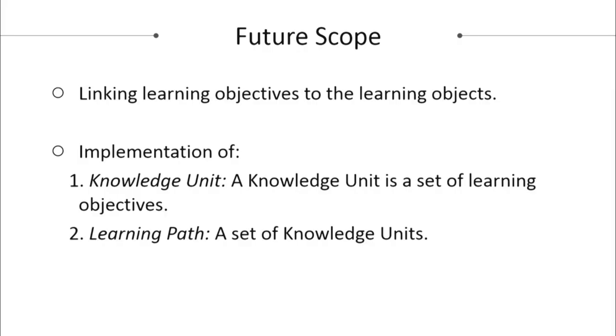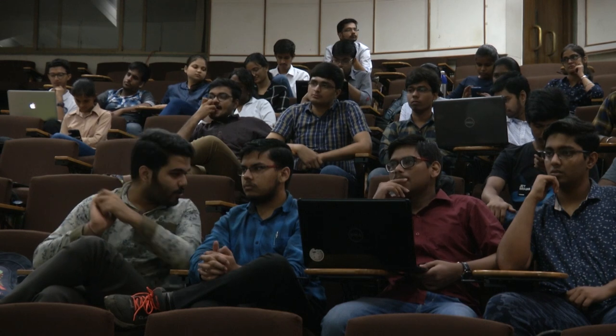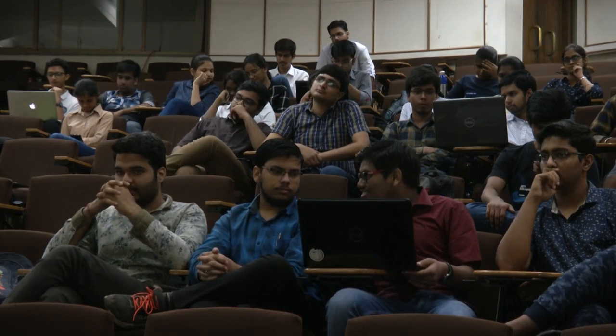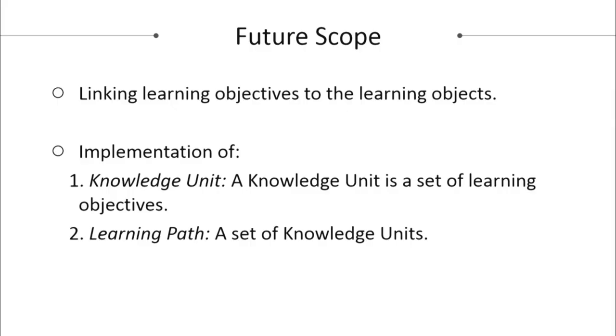We need to link learning objectives with learning objects so they can be fetched easily at the time of need. We can also implement knowledge units and learning paths. A knowledge unit is a set of learning objectives, and a learning path is a set of knowledge units. For example, if a user wants to become a web developer, their learning path would include understanding HTML, CSS, and JavaScript. Understanding HTML is a knowledge unit, and to attain that, users go through various learning objectives such as how to create tags, body, head, etc.